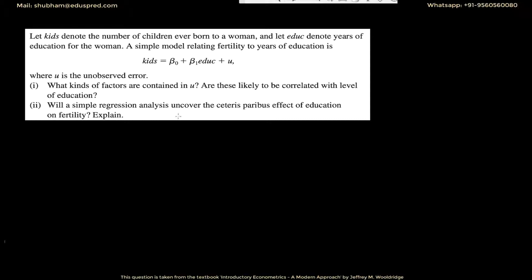In this video, I'm going to discuss this question. Let 'kids' denote the number of children ever born to a woman and let 'EDUC' denote years of education for the woman. A simple model relating fertility to years of education has 'kids' as the dependent variable, 'EDUC' as the independent variable, and U as the unobserved error term.